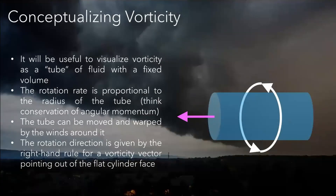For the purpose of this presentation, it'll be useful to visualize vorticity as these tubes of fluid with a fixed volume that can be stretched, tilted, and moved around by the flow. This is a neat way to think about it because the rotation rate ends up being proportional to the radius of the tube. You can think of this like conservation of angular momentum — the classic example being the ice skater pulling their arms in and spinning faster. The tubes can be moved around and warped by the wind field, and the rotation direction is going to be given by the right-hand rule. If you curl your fingers in the direction of rotation, your thumb pointing up out of your right hand is the vector associated with that.